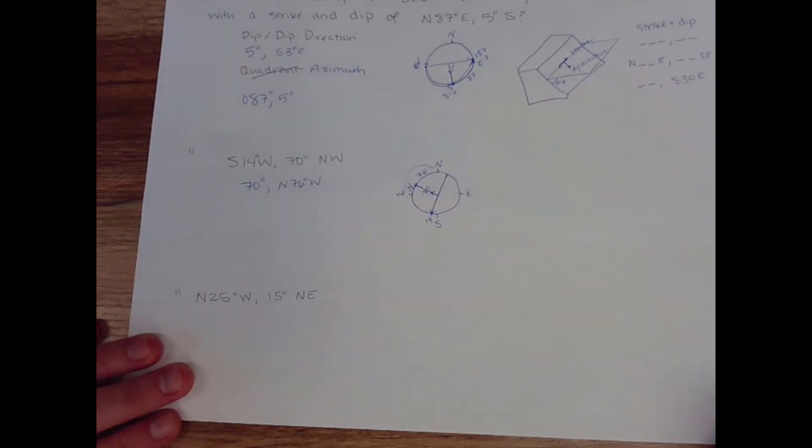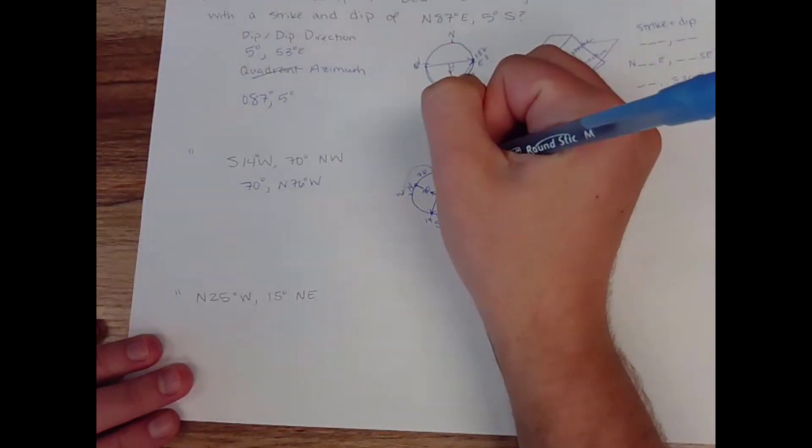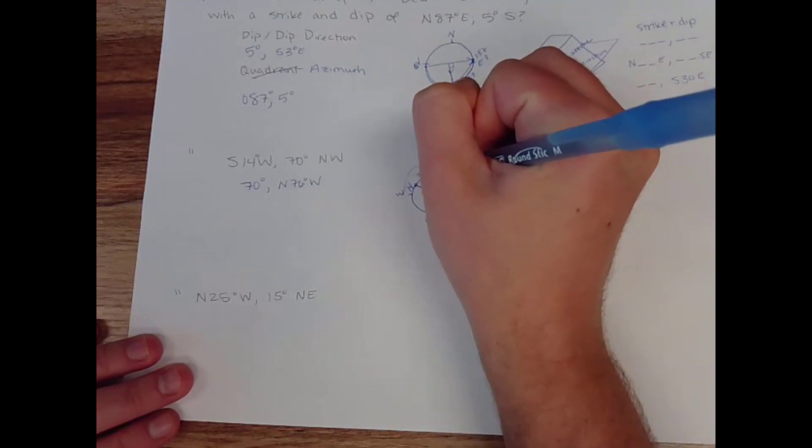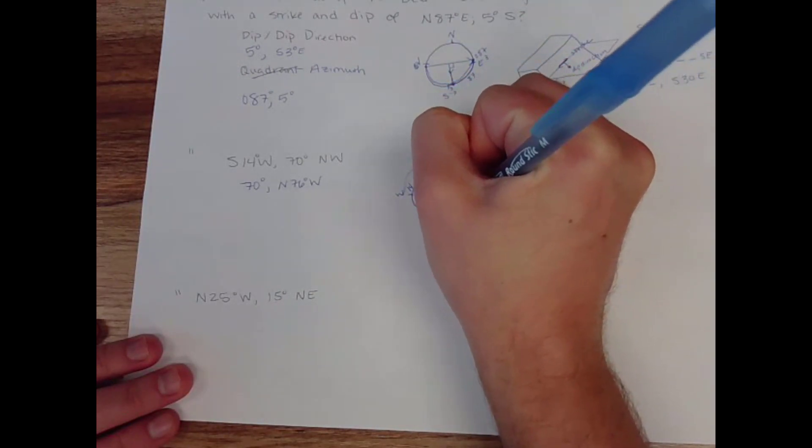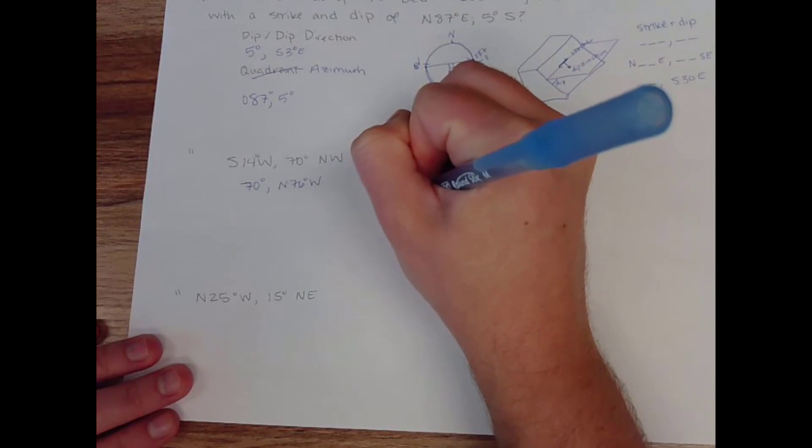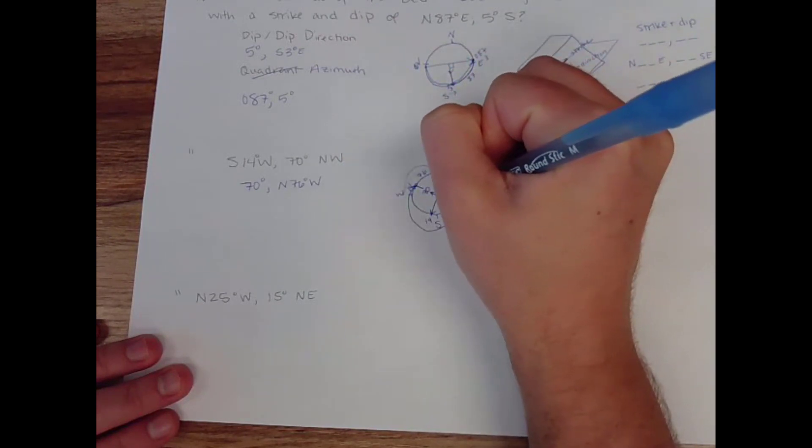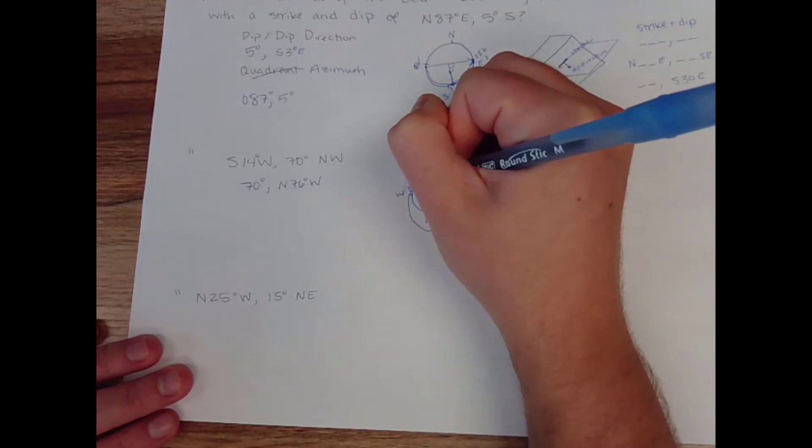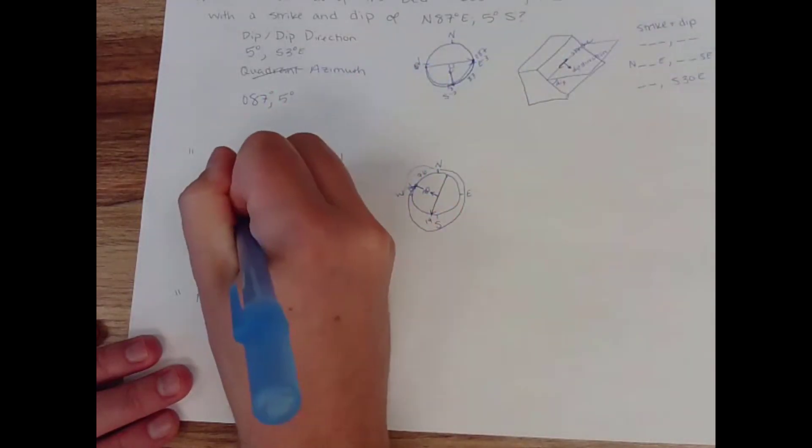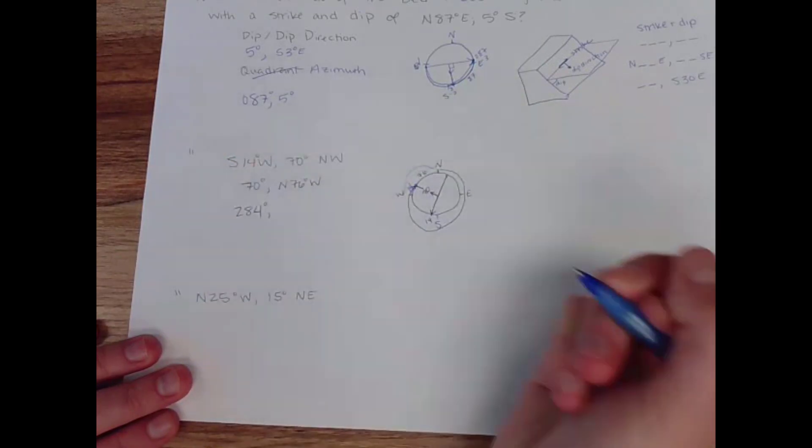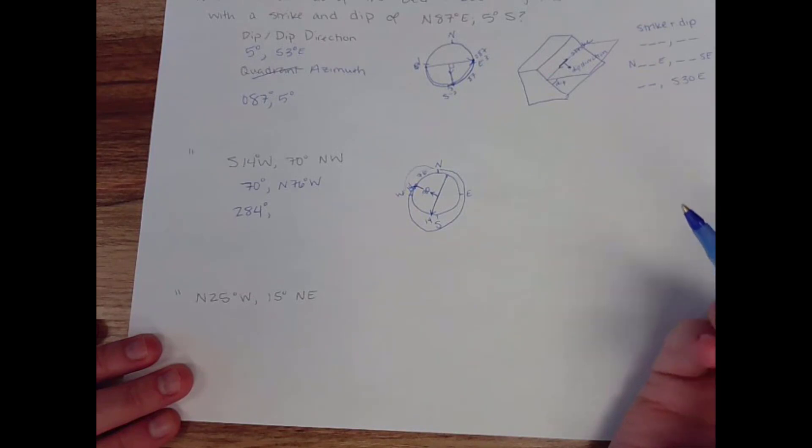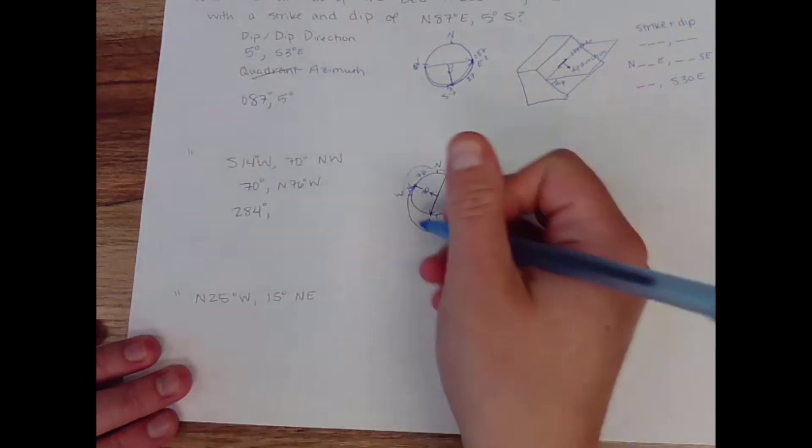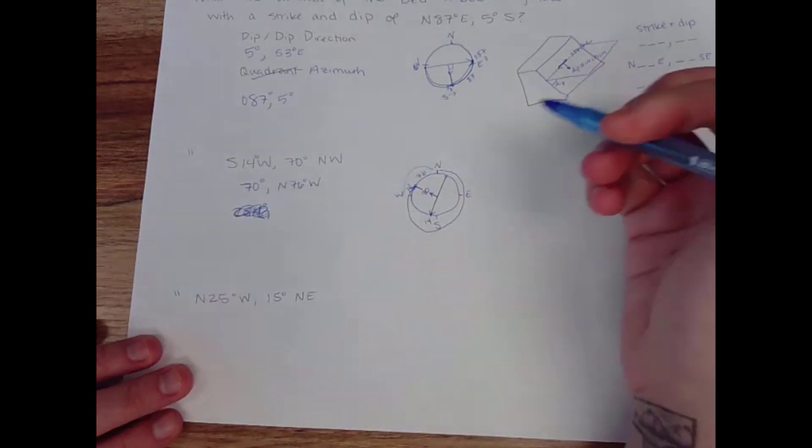And then I'm going to write it in azimuth as well. So it's going to be coming for azimuth all the way around to this point, which is going to be 90, 180, 270. 270 plus 14 is 284. And our, oh, shoot. Nope, I was about to write dip direction in azimuth. Sorry, guys.